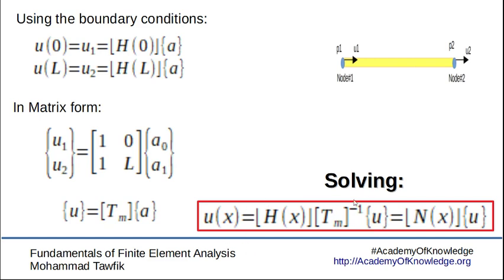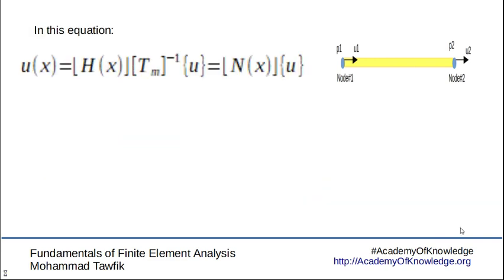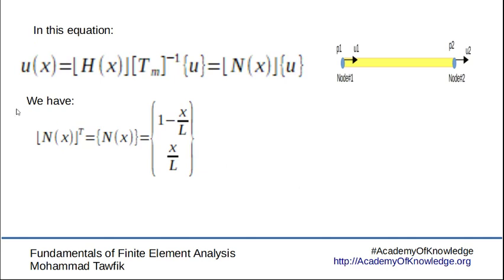Combining H and T gives us what we call the trial functions N of x. Again, trial functions are another form or another name for interpolation functions.